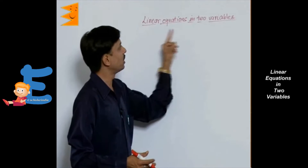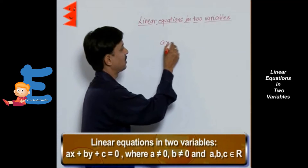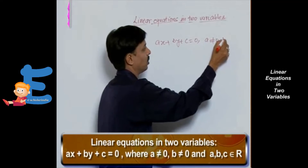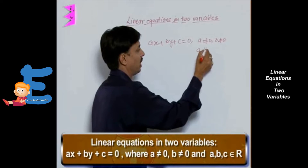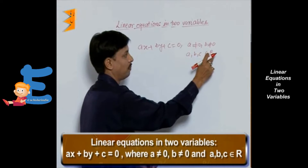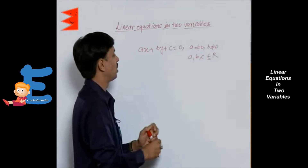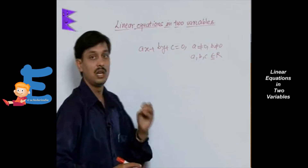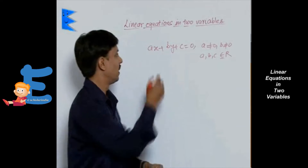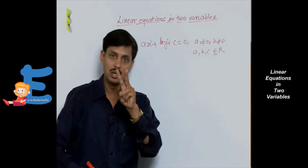Now, about the linear equations in two variables. An equation in the form of AX plus BY plus C equals 0, where A is not equal to 0, B is not equal to 0, and A, B, C are real numbers — this is the symbol of belongingness, meaning A, B, C all belong to the set of real numbers. This type of equation AX plus BY plus C equals 0 is known as the linear equation in two variables, where X and Y are the two variables and their powers are 1. So we can say this is the linear equation involving two variables.